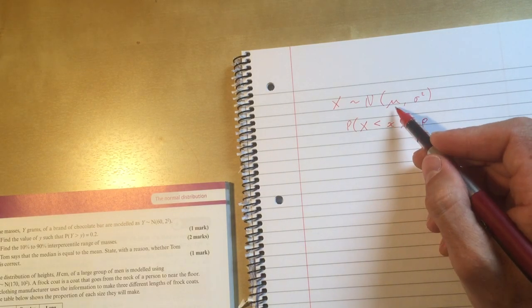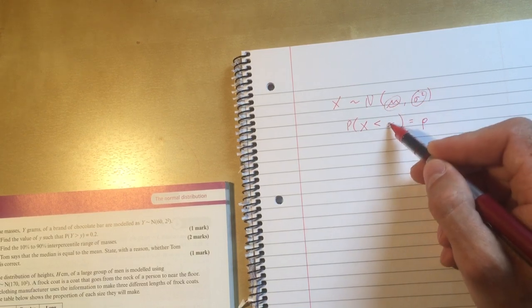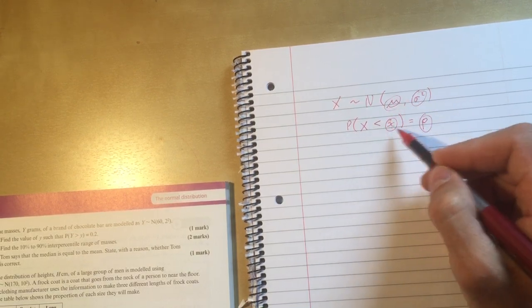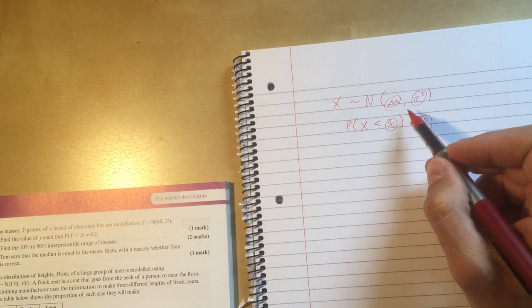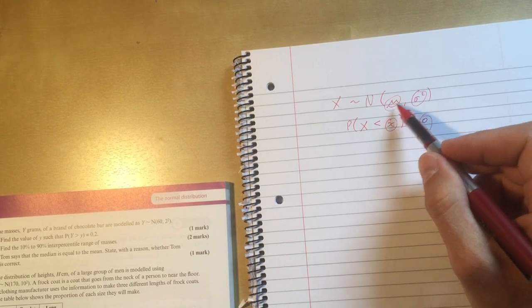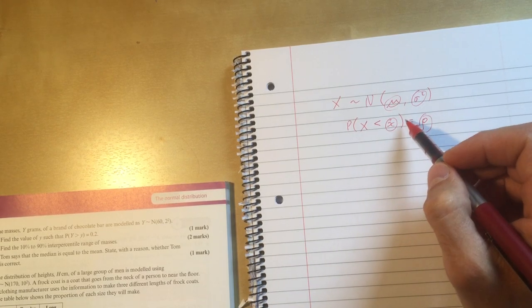I've got mu, I've got sigma, I've got little x, I've got p. One, two, three, four things involved. So I'm going to get questions where you'll get told three of those things, and you have to work out the other one.